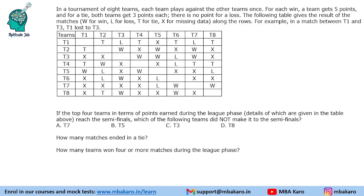Hello everyone, welcome to Aptitude Jab. This is a set based on games and tournaments. It says that in a tournament of 8 teams, each team played against the other teams once — so a round robin league.